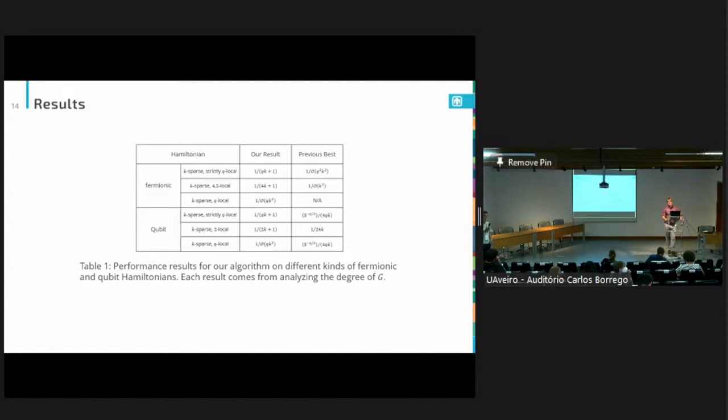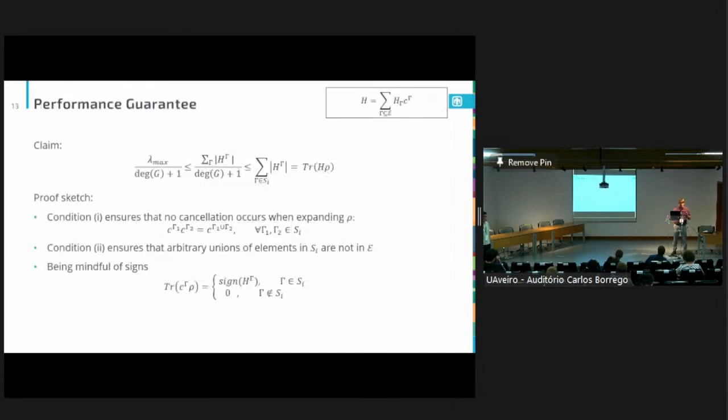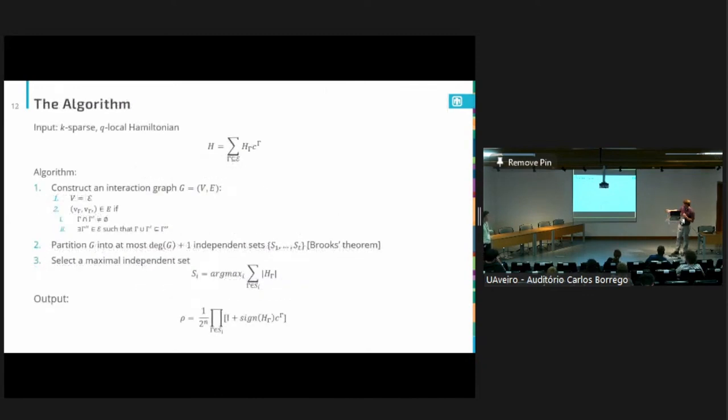Thanks for the nice talk. I wanted to ask for the fermionic case K sparse Q local construction, in what sense does the construction actually differ from the Harris-Semenko et al paper? I understand that you obtain better approximation ratios, but I was just wondering what step exactly of the algorithm is different. So Harris-Semenko et al, instead of working directly with independent sets like we did here, which we were able to unlock because we define our interaction graph a little bit differently than they do, Harris-Semenko et al have to work with diffuse sets, which are essentially smaller than our independent sets.